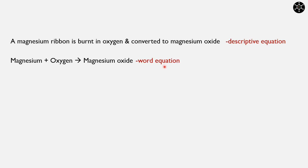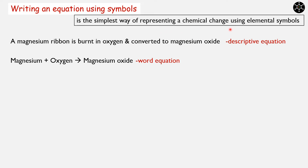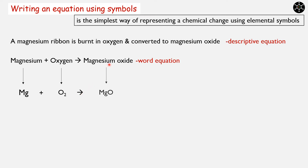In an effort to further simplify representing a chemical equation, we have writing an equation using symbols, where we represent a chemical change using elemental symbols. For the same chemical change — magnesium + oxygen giving rise to magnesium oxide — the elemental symbol for magnesium is Mg, and the symbol for oxygen gas is O₂. Both magnesium and oxygen act as reactants, so we separate them by a positive sign. The chemical process is indicated by an arrow, and the chemical formula for magnesium oxide is MgO.